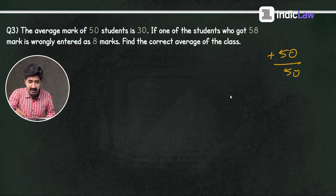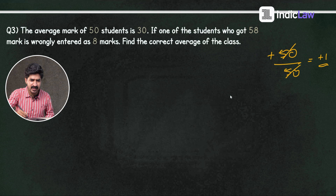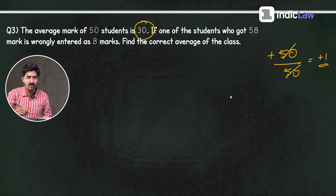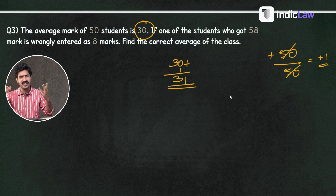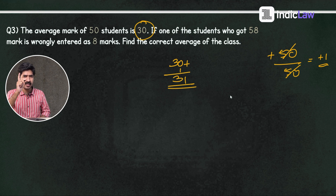That means the average is the total divided by 50 students. One mark difference is 60 — that is, 58 minus 8 equals 50, added to the total. The number of data is 50 students. The correct average will be the adjusted total divided by 50. We need to work with the number of data provided.